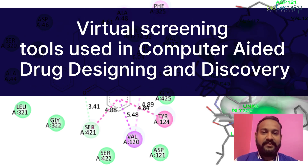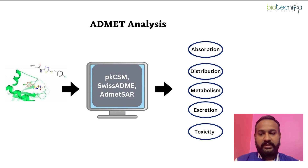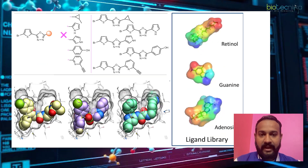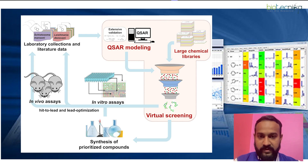Hello and welcome everyone to another demonstration video. Today we'll be looking at some of the ADMET property tools. In computer-aided drug designing and discovery, initially you have to prepare a ligand library, followed by virtual screening. We call it virtual screening because we are doing it virtually, not physically, and screening is basically a method of filtering.